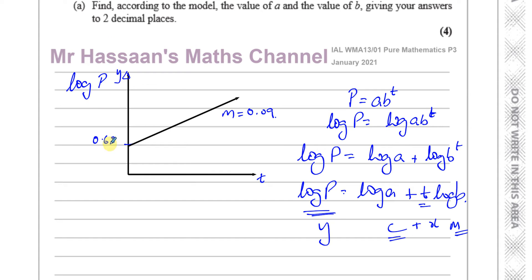That's why they plotted log P so we can get the straight line form. So we know that the Y-intercept, which is known as C, is log A, log to the base 10 of A. And the gradient is equal to log B.